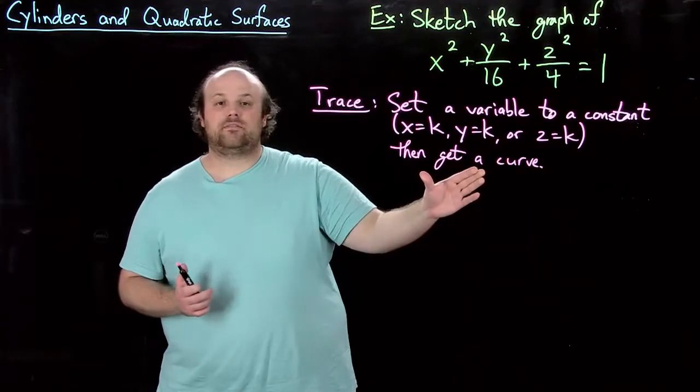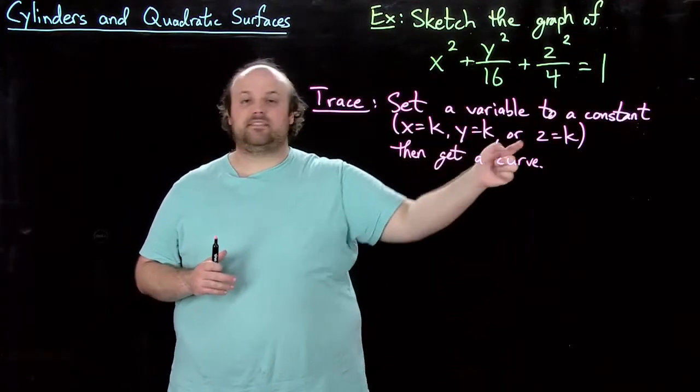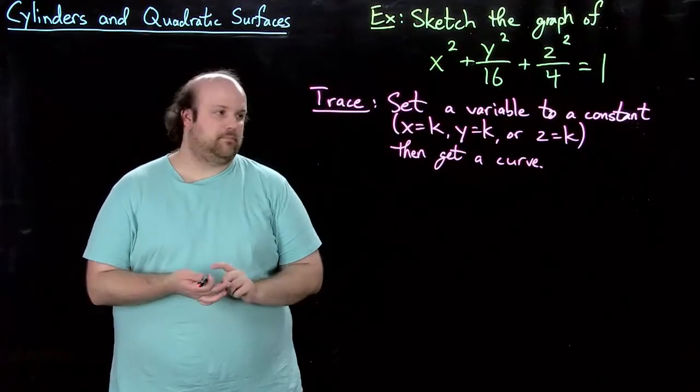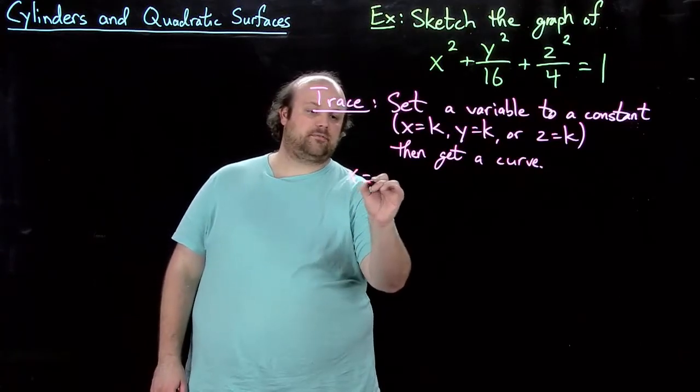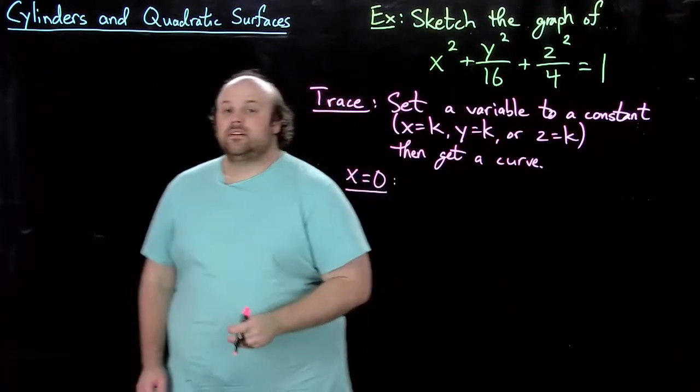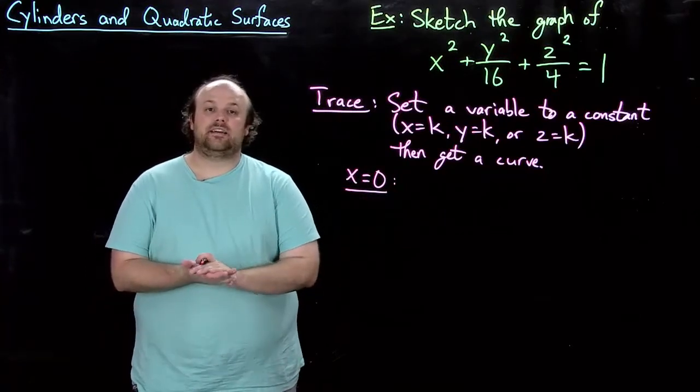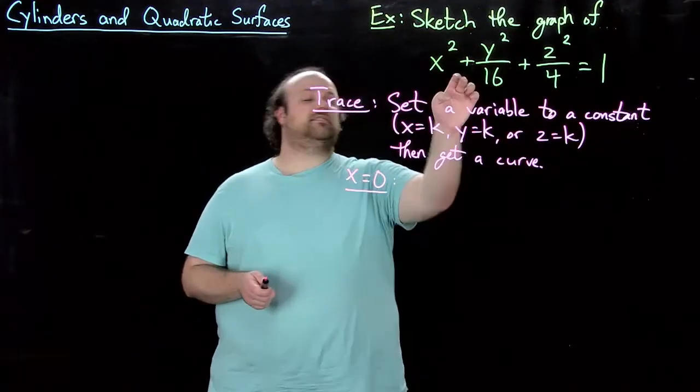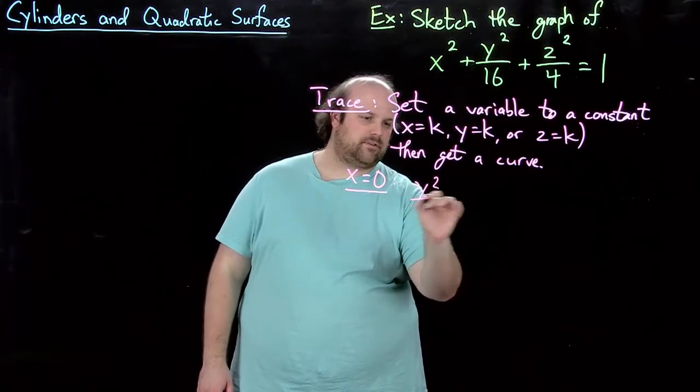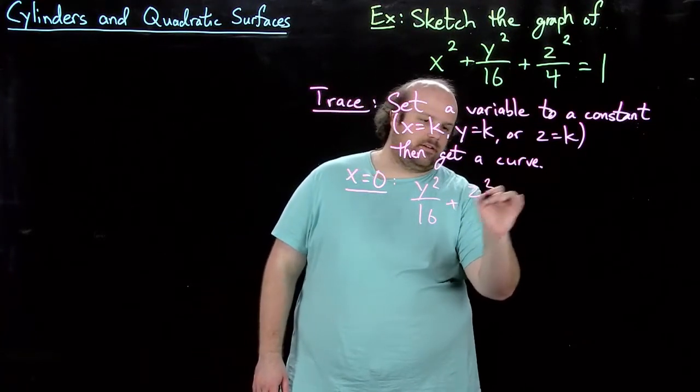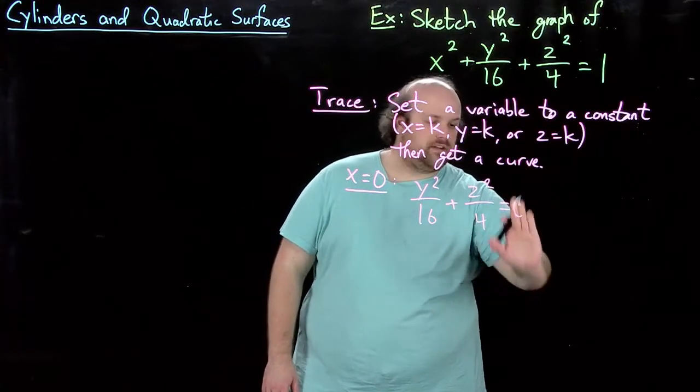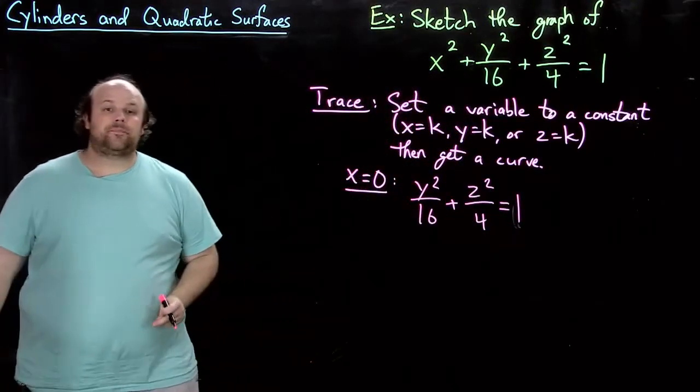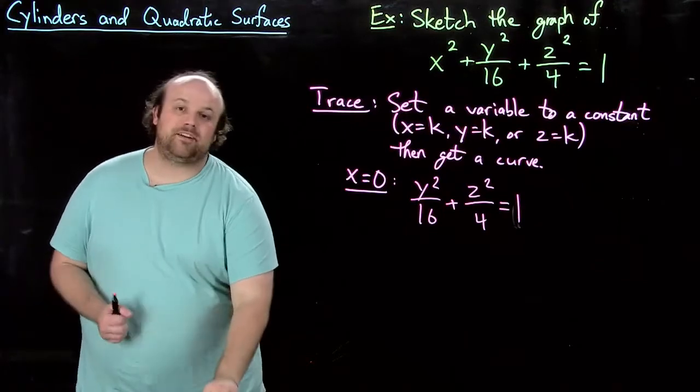And that curve lives in one of these planes depending on which one you picked. So let's say, well, let's do for this example. Let's take the trace x equals 0. So this trace, the curve we're going to get, is going to lie in the y, z plane because that's what the plane x equals 0 is. So if we plug x equals 0 in up here, what do we get? We get y squared over 16 plus z squared over 4 equals 1. Well, you might know that as an ellipse.